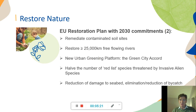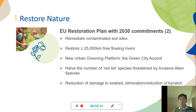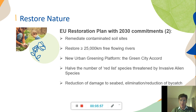The restoration elements also look at remediating contaminated soil sites, restoring 25,000 kilometres of free-flowing rivers — particularly important when we look at areas such as the Western Balkans, which still have a number of free-flowing rivers, as well as addressing dams and damaged rivers no longer providing real renewable energy benefit. Also included is greening cities by bringing biodiversity into urban areas, halving the number of red-list species threatened by invasive alien species, and reducing damage to the seabed and eliminating bycatch.